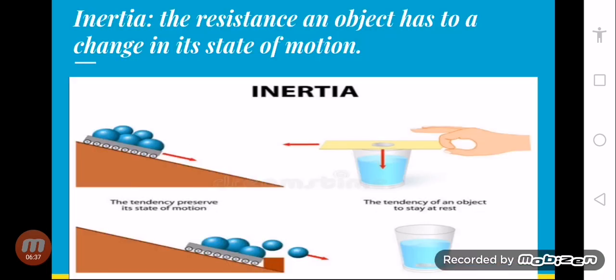Inertia. Newton's first law of motion is also called the law of inertia. What is inertia? Inertia is the resistance an object has to change its state of motion. The property that keeps an object resisting any change to its state of motion is called inertia.